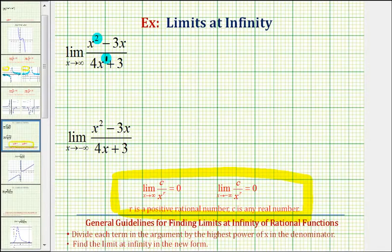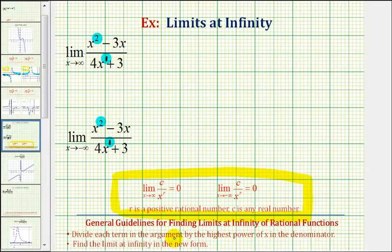The same is true for our second limit because it's the same function. But there is a general guideline for finding limits at infinity that will help us determine whether this approaches positive or negative infinity. The guideline is: when determining limits at infinity of rational functions, we want to divide each term in the rational function by the highest power of x in the denominator. Once we do this, we should be able to determine our limit in the new form.